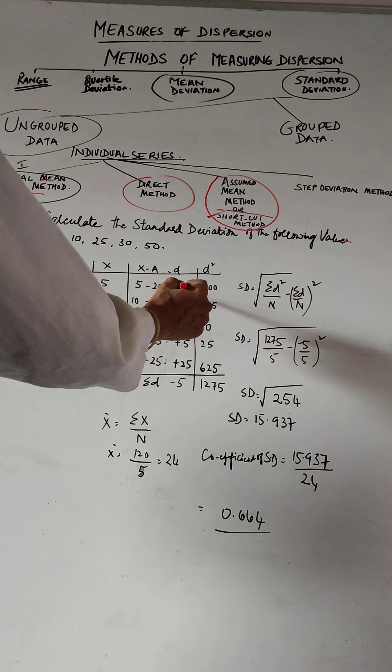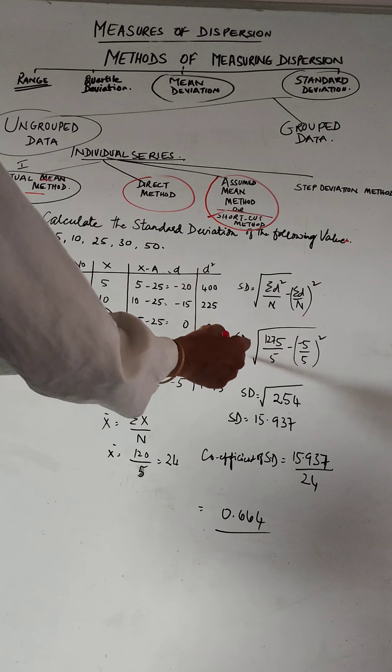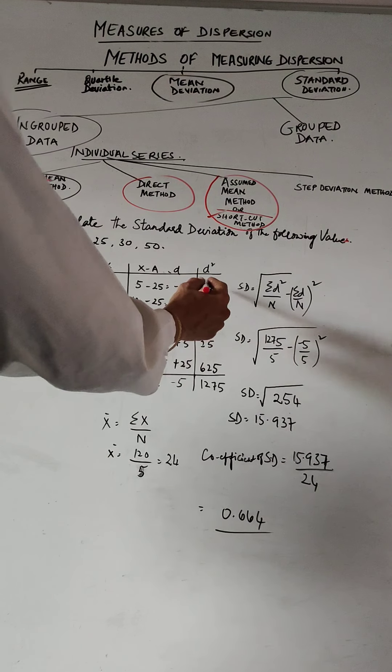For example, 5 minus 25 is minus 20. I write it as minus 20, and then I square them up in the next column.